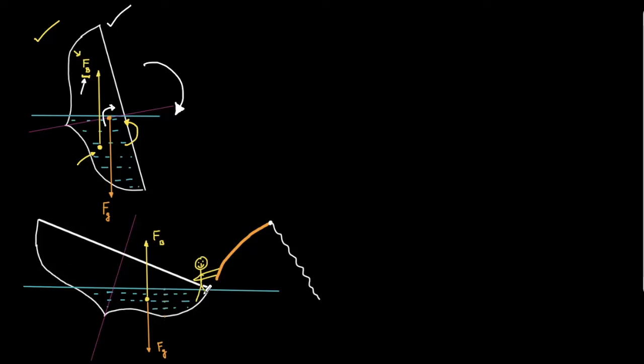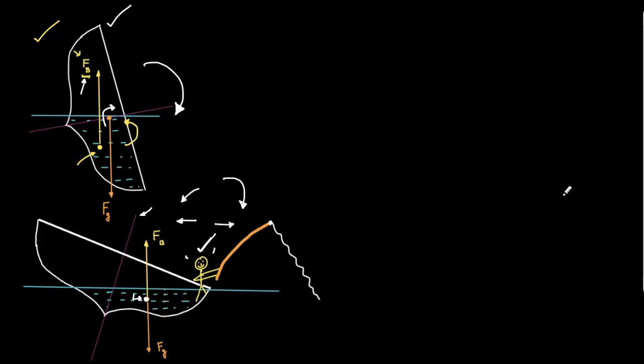Suppose you have a small boat and you walk to the edge of it. When you go towards the edge, if I take you and the boat together, your center of mass will not lie on the line of symmetry because you also have some mass — it would shift to the edge, which is also where the centroid of the submerged portion lies. This is a critical position: go a little bit further and the boat will topple completely; go back the other way and you'll return to safety.